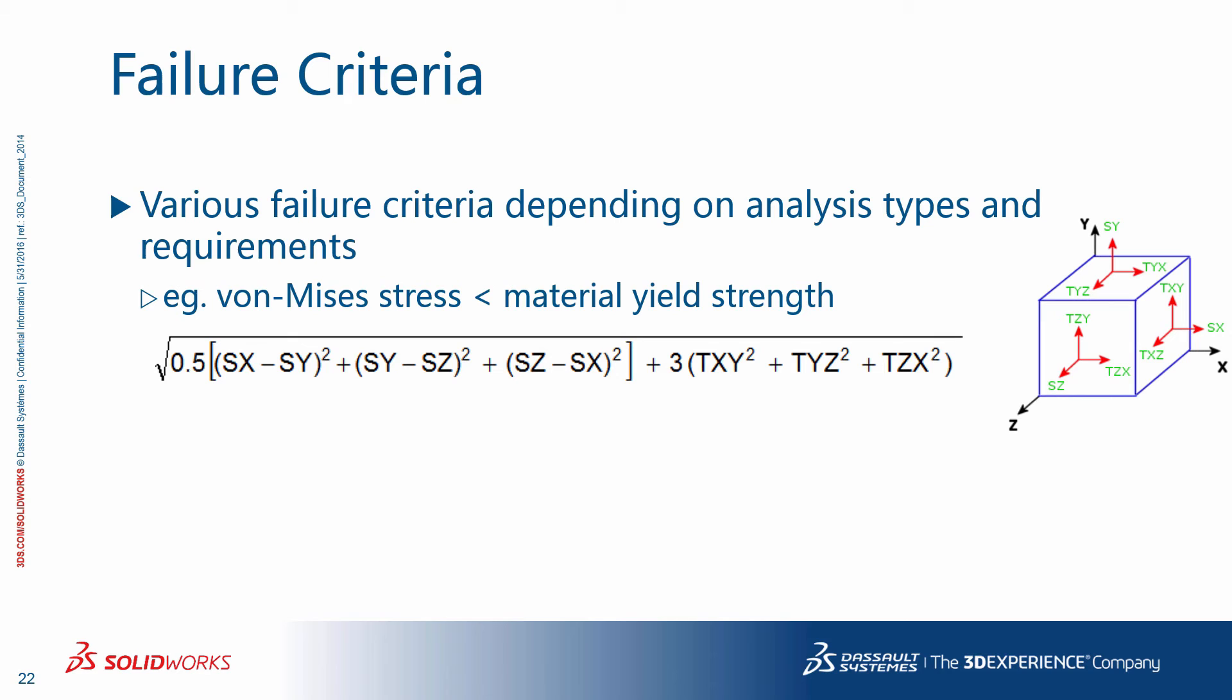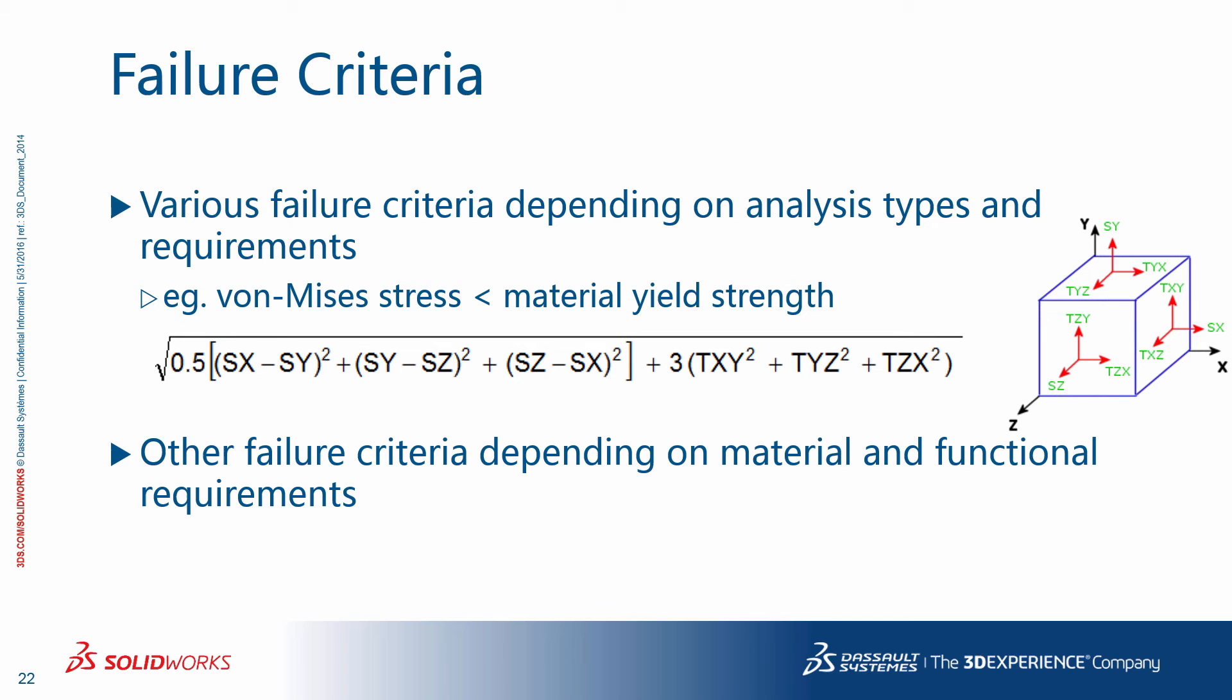You can apply different failure criteria depending on analysis types and different requirements. As an example, during post-processing and the interpretation of results, you may compare the equivalent Von Mises stress throughout the model with the yield strength of the material as a limiting value. Depending on the material and functional requirements, different failure criteria should be examined.